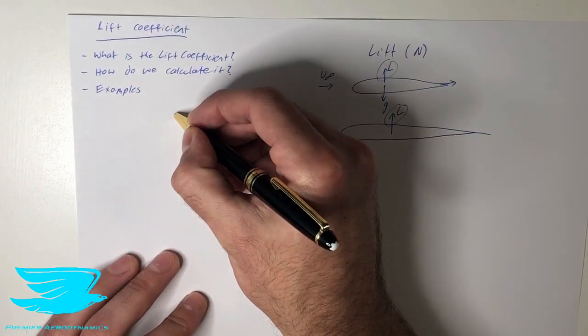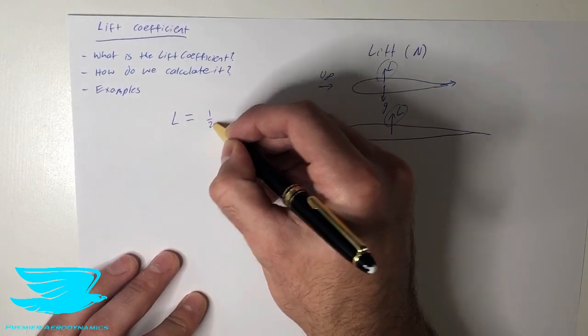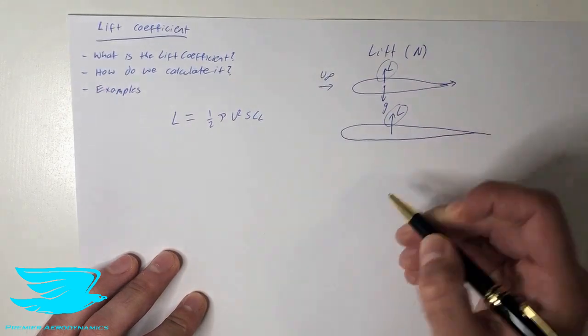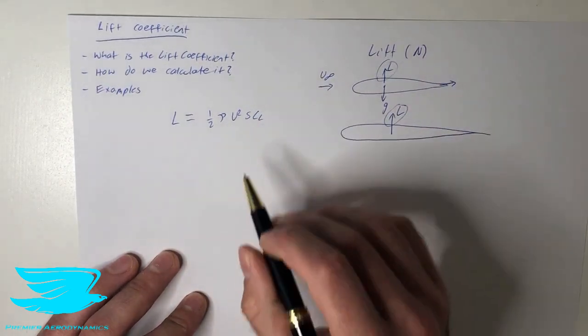So the lift coefficient comes from this equation, so lift equals half rho v squared s c_l. So we'll go through each one of these terms individually.